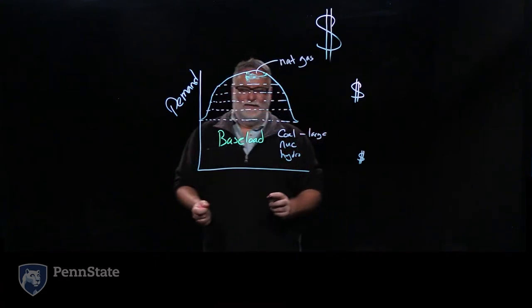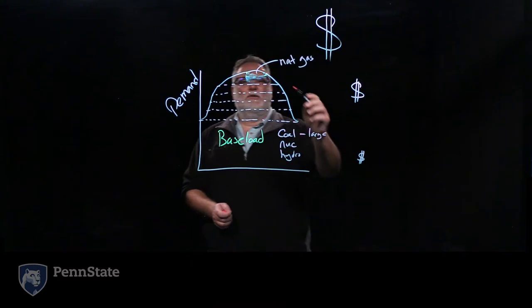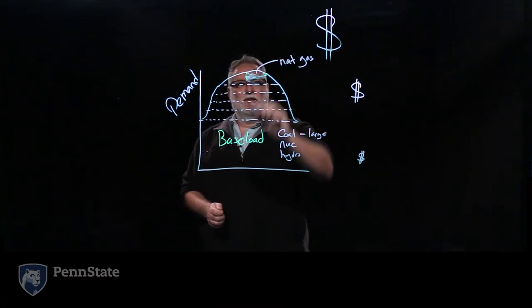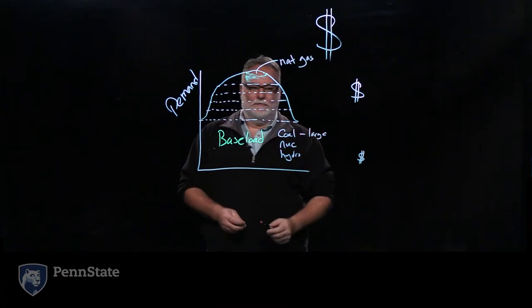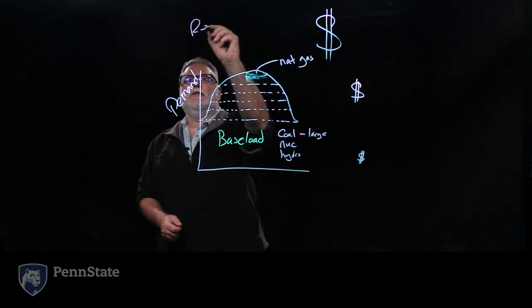Coal doesn't like to be turned on and off. And so we would use smaller and smaller natural gas peaking units and we would add more into the system. And so this was how we did things under the regulated system.